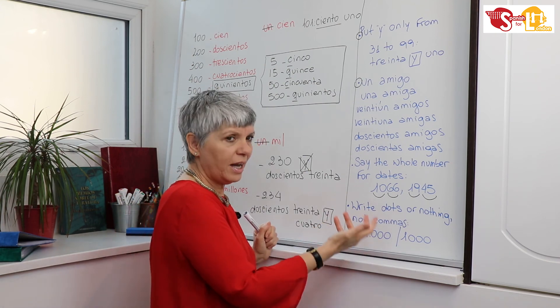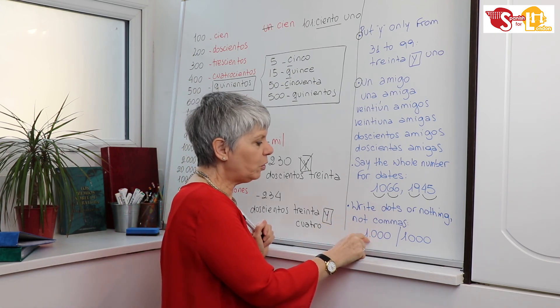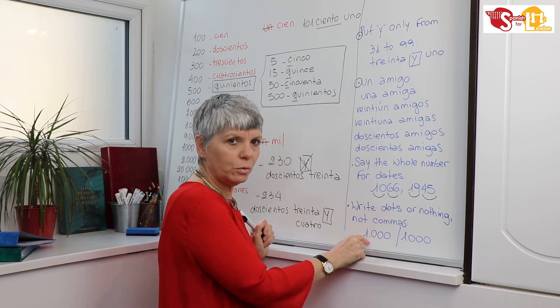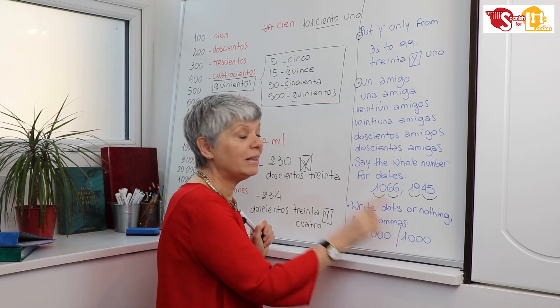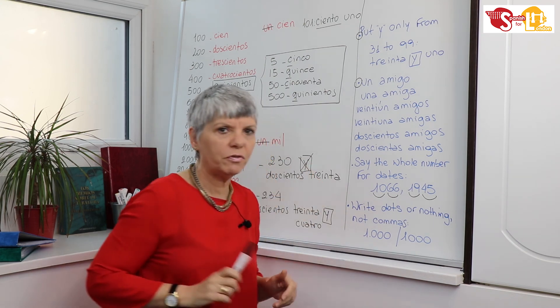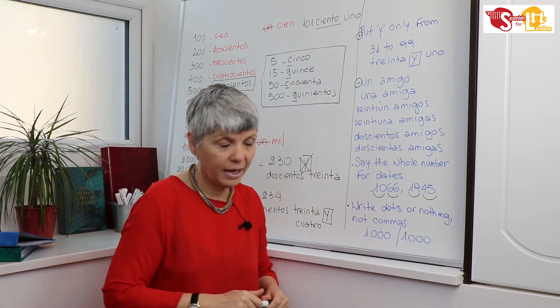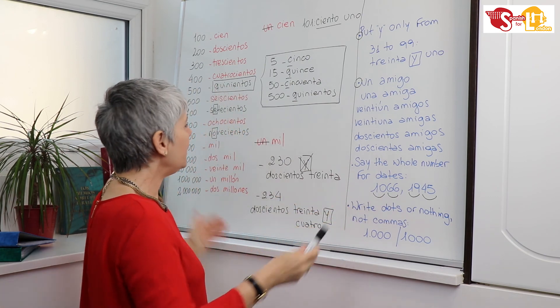Say the whole number for dates. And last thing, in numbers, when you write numbers, in English we put comma here. We don't do that. Write dots or nothing, but not commas. We use commas only for fractions in math. Ok? That's the end of the lesson.